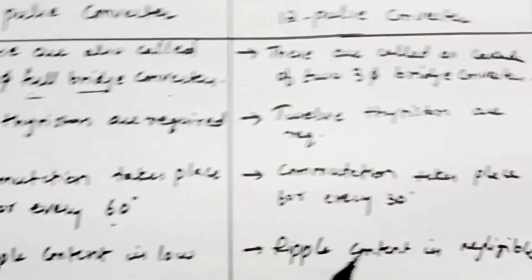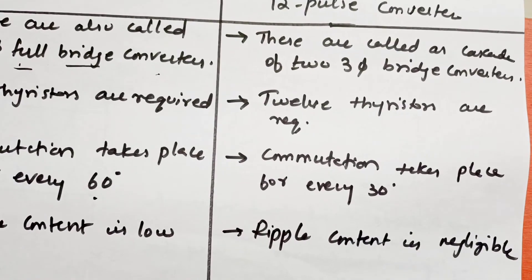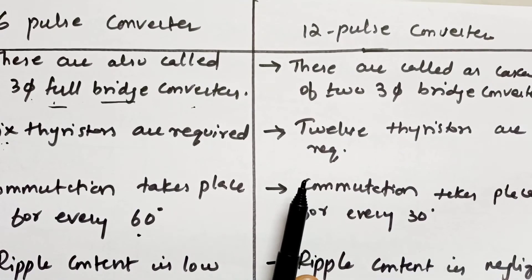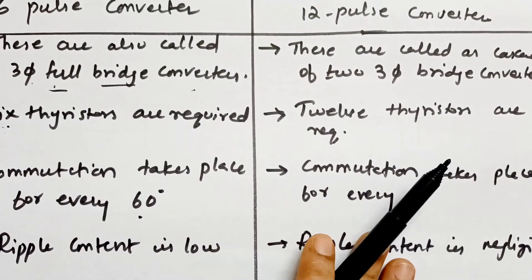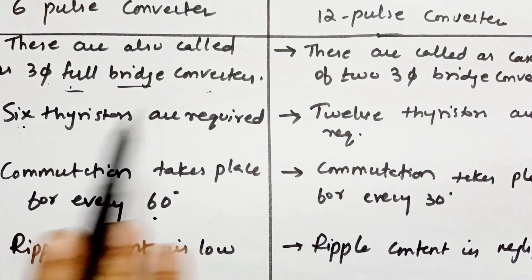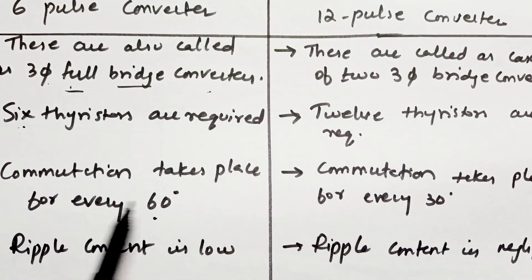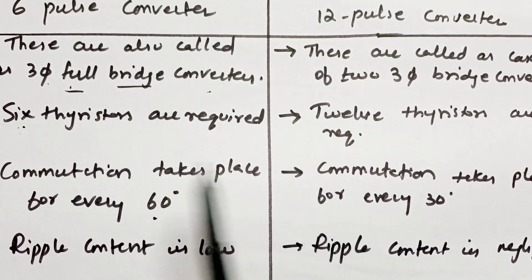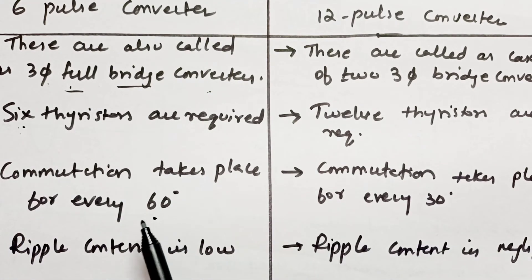The ripple content in the 6-pulse converter is low, whereas in the 12-pulse converter the ripple content is negligible — practically not present at all. To recap: 6-pulse uses 6 thyristors with a 60-degree commutation angle and low ripple; 12-pulse uses 12 thyristors with a 30-degree commutation angle and negligible ripple. Very easy to remember!